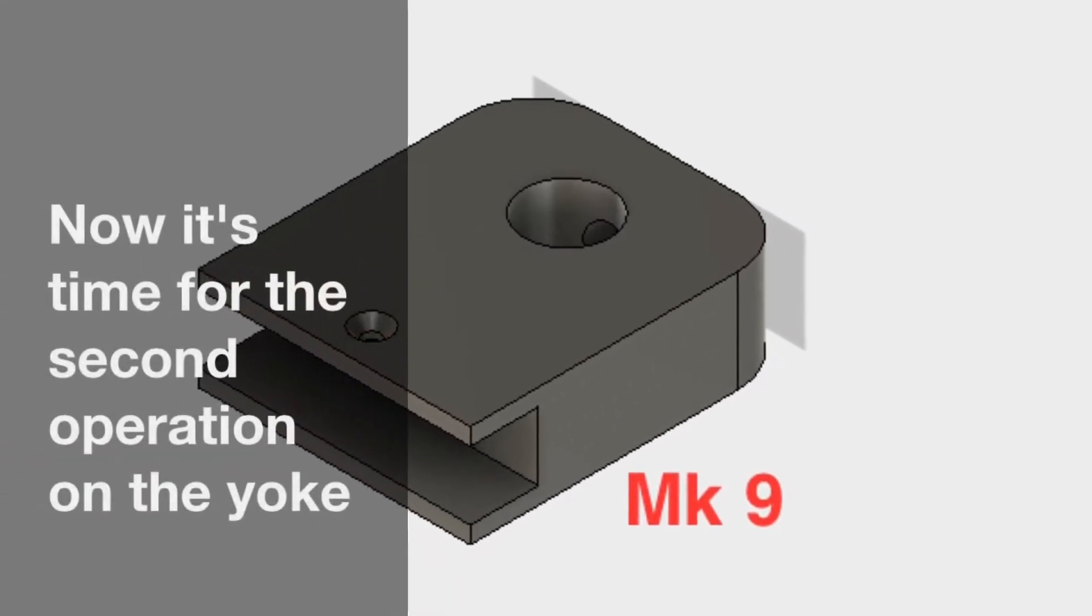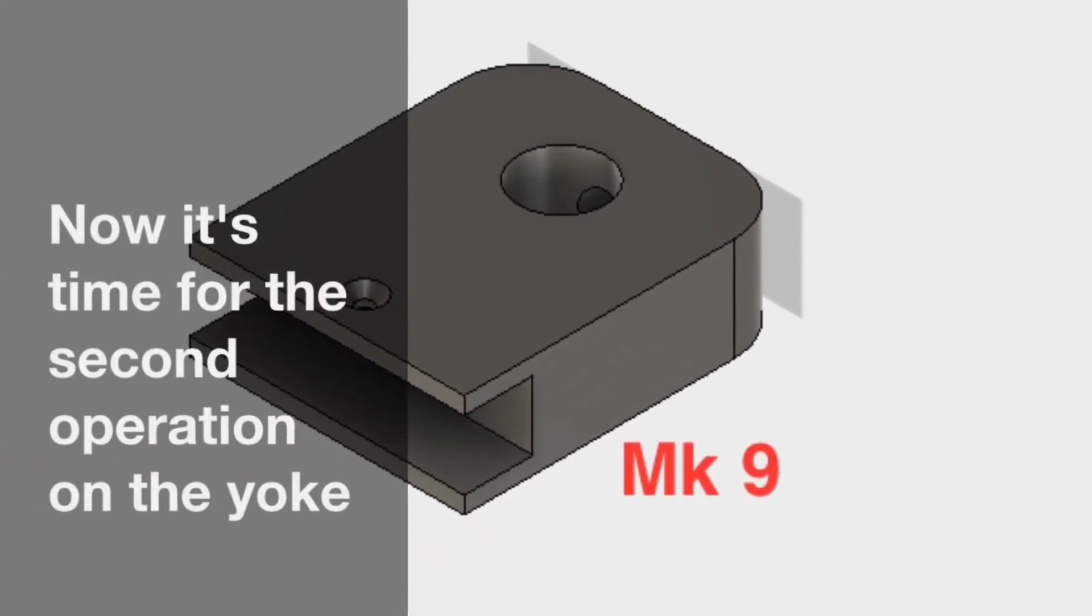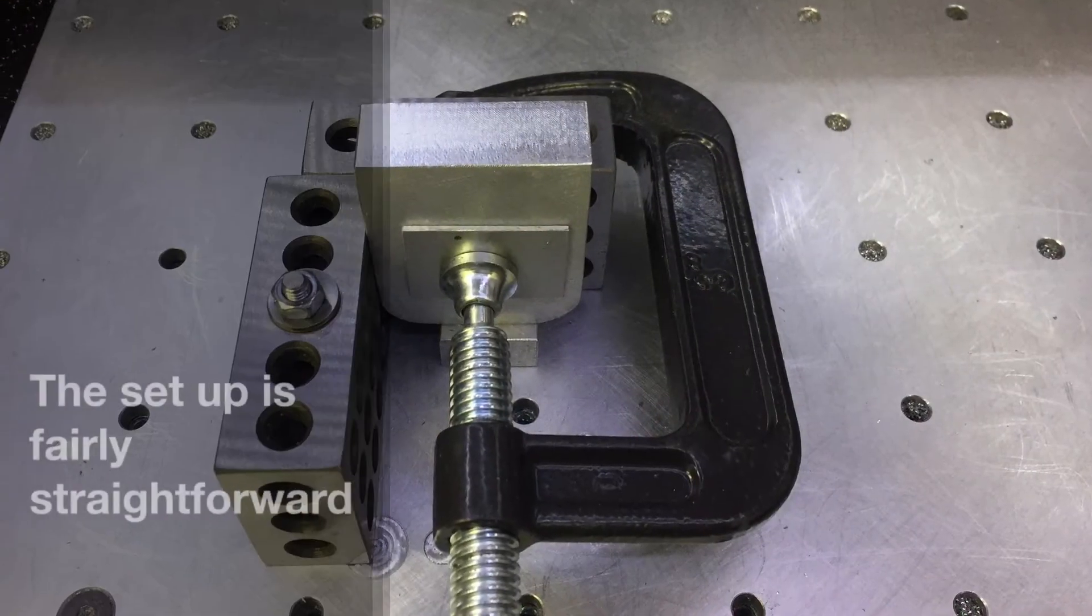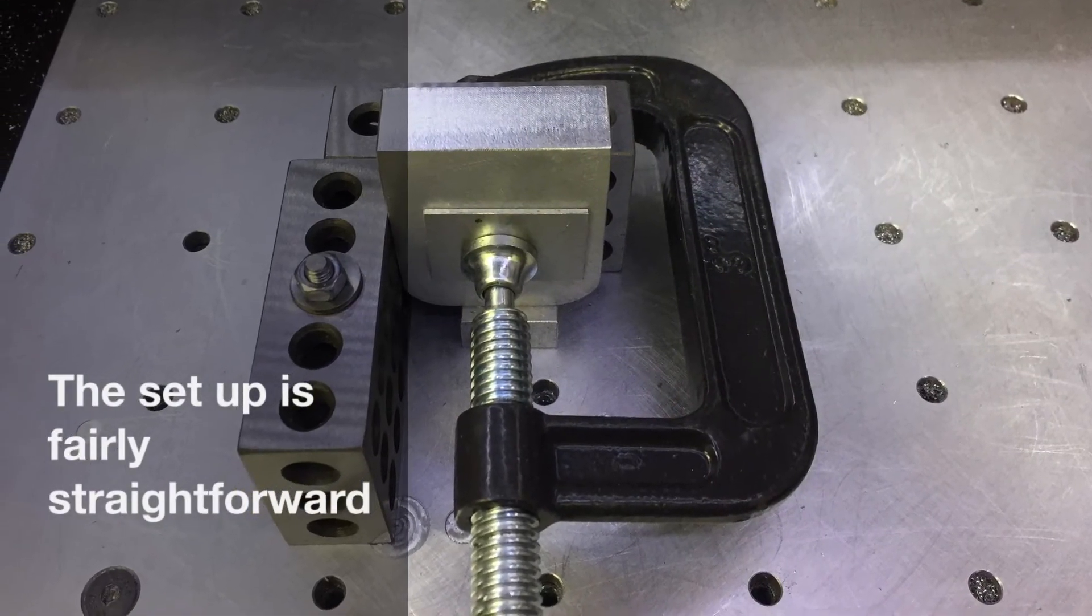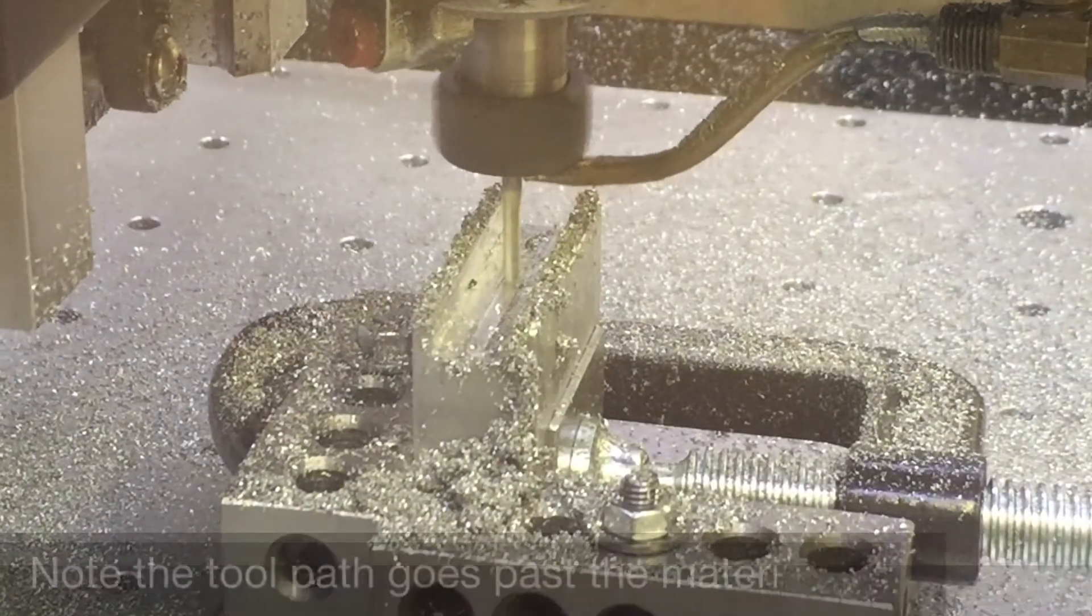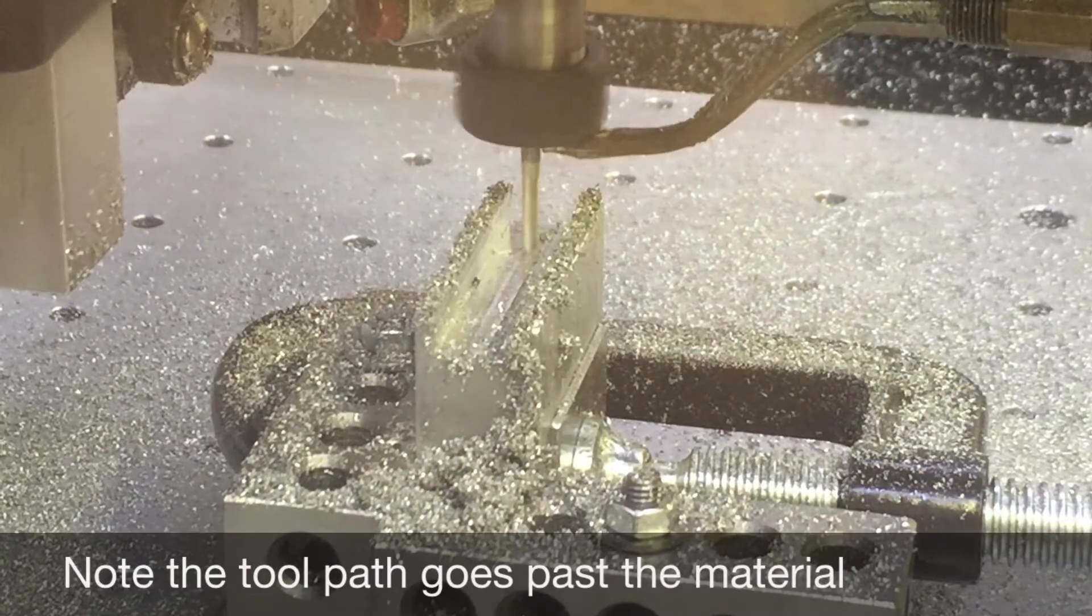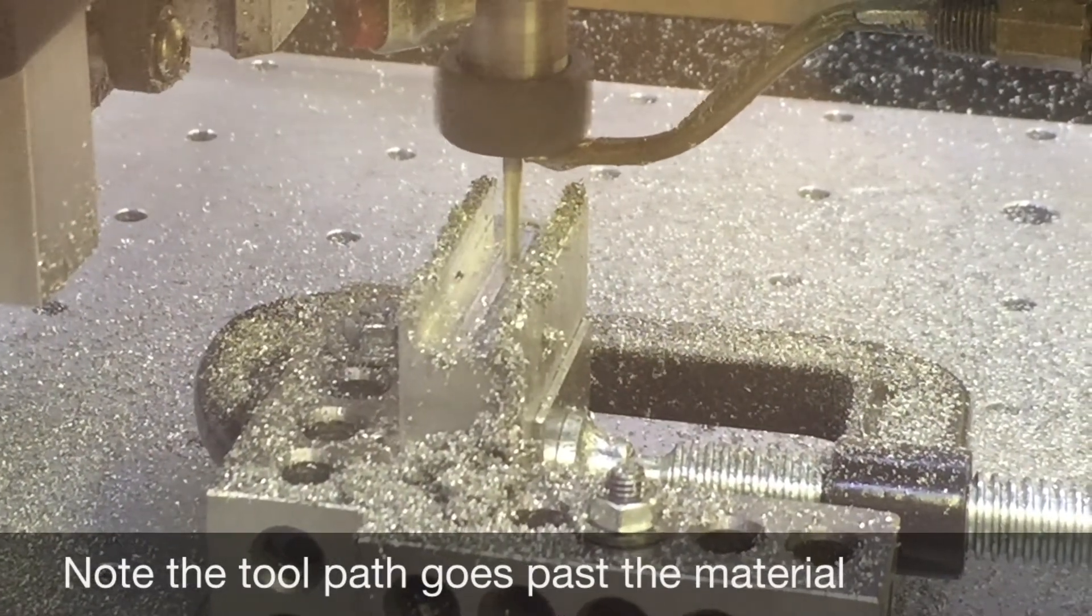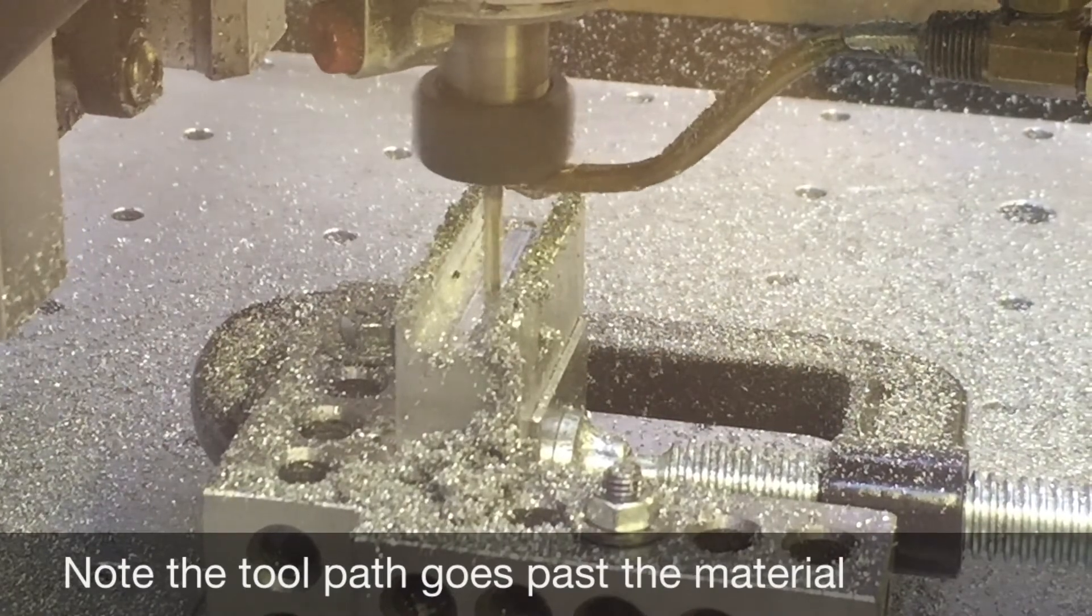Once everything was done, that's when I did my top two bolt holes and my dowel pin hole. This is probably the most complex part because it's a two-sided operation. You need to pick up the part along your X and Y so that it's in the center, and then you just need to use the geometry that I've provided to machine the half inch wide by half inch deep slot in the yoke.